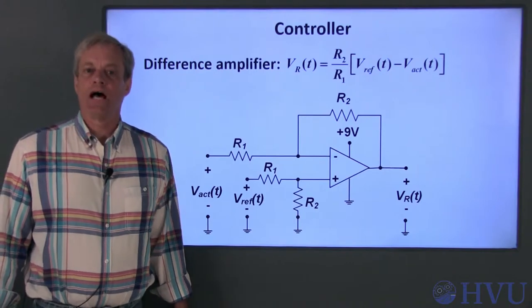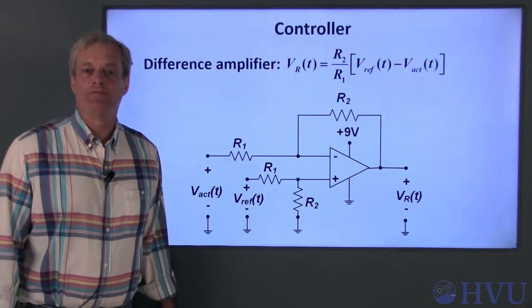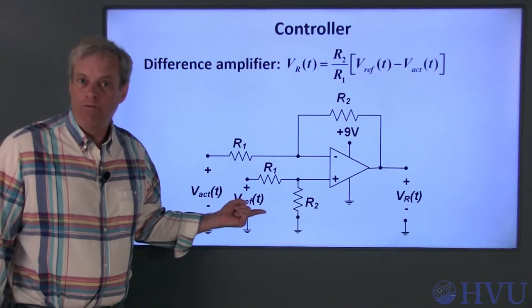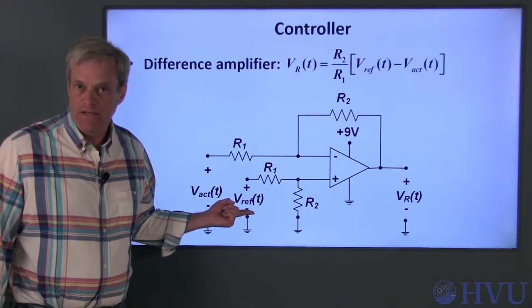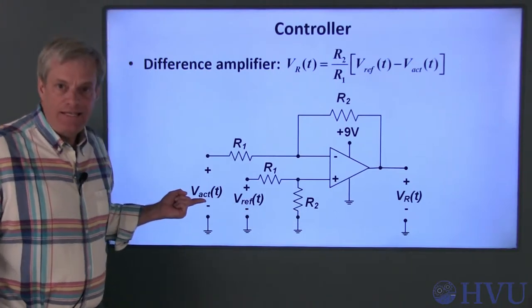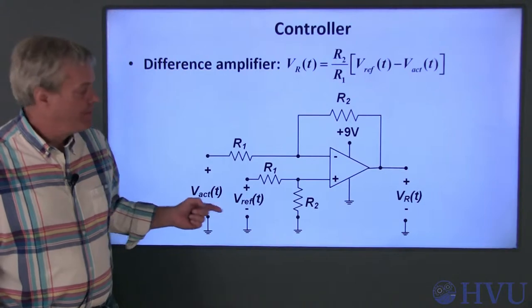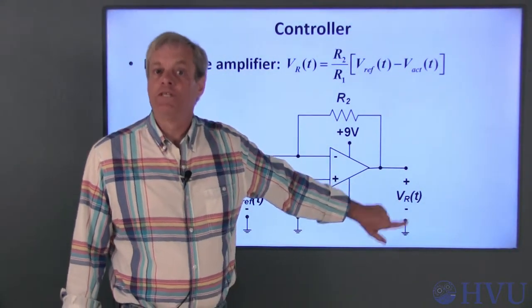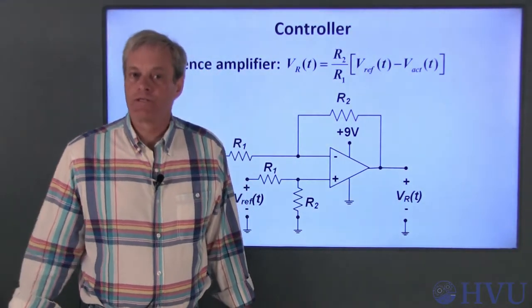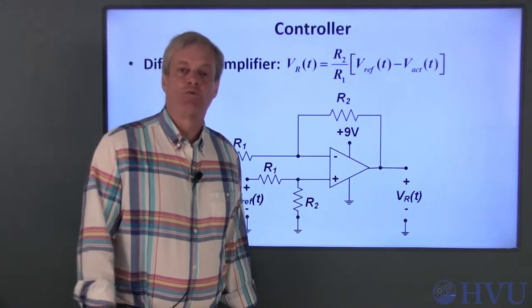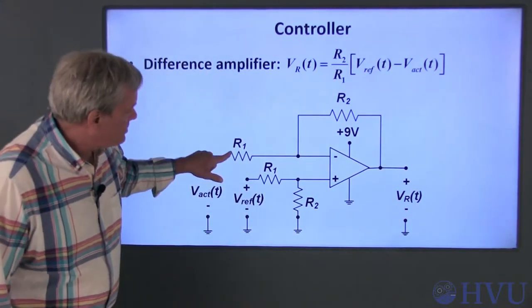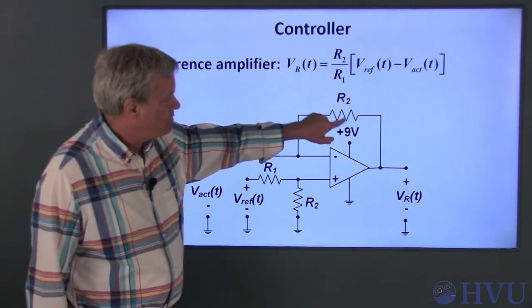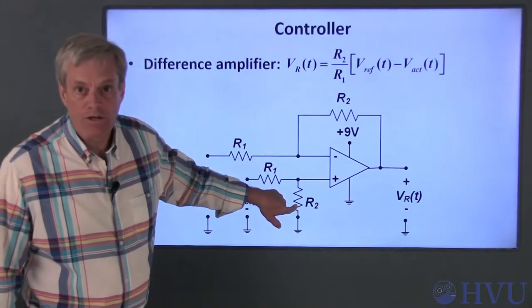For our controller, I'm going to use what's commonly called a difference amplifier. It has two inputs. Vref is the desired temperature, and Vact is the actual measured temperature. This voltage, V sub R, is the voltage that will be applied to the power resistor whose temperature we're controlling. These two resistors both have resistance R1, and these two resistors both have resistance R2.